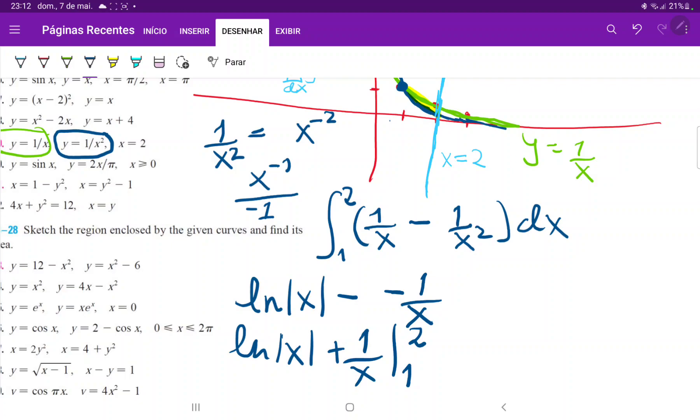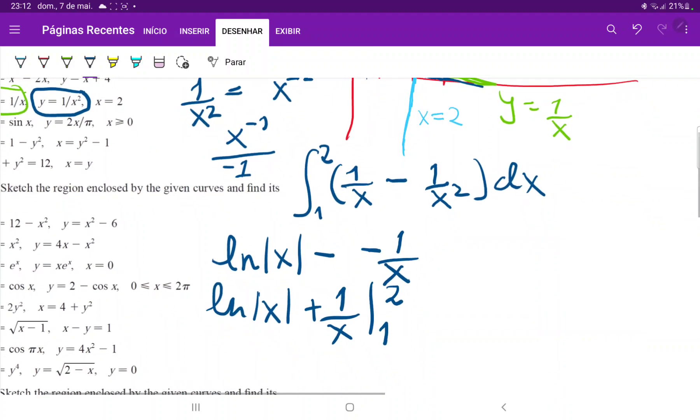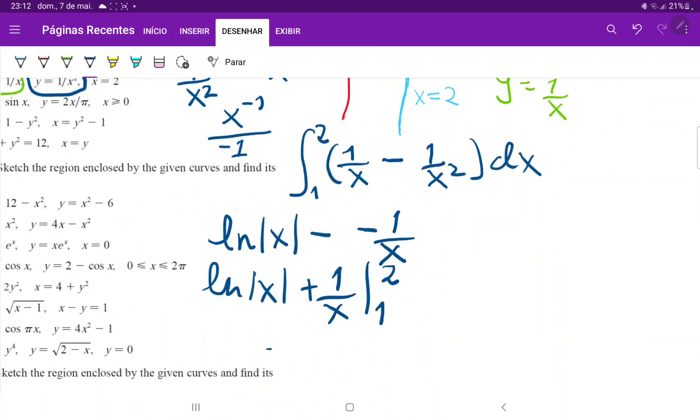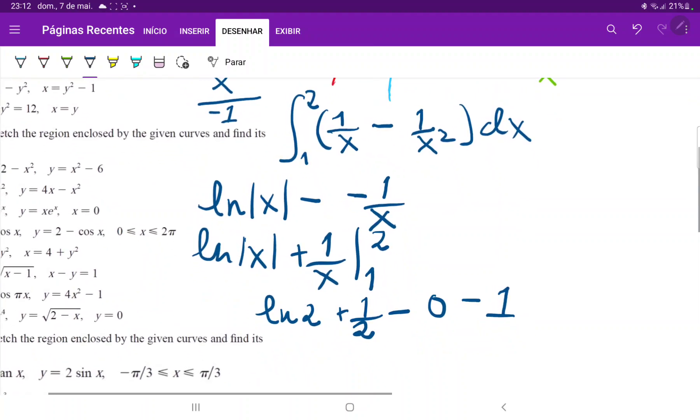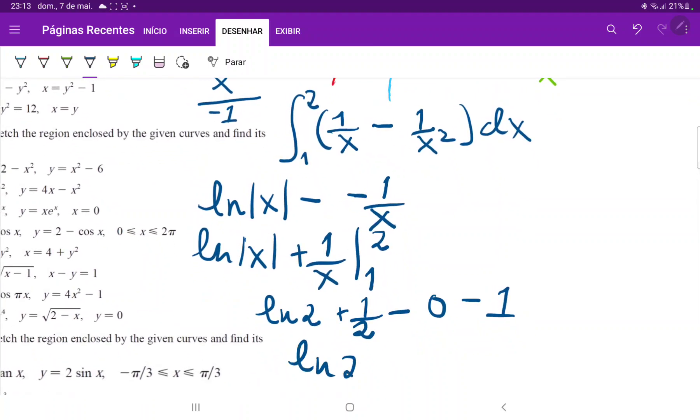And then we're evaluating it from 1 to 2. And now it is pretty straightforward. We just plug in the bounds. So this becomes ln(2) plus 1 over 2 minus ln(1) is just 0, so minus 0, and then minus 1 over 1, which is just 1. So if we want to clean that up, this looks like ln(2), 1 half minus 1 is minus 1 half. And this is our answer.